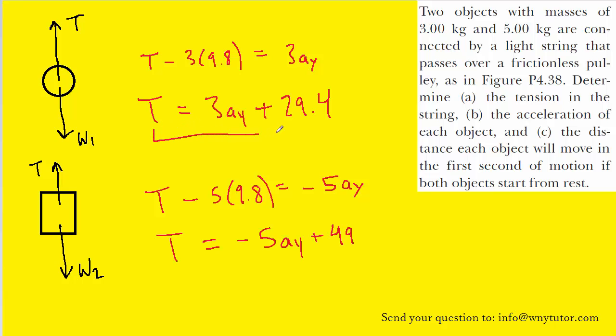So now we have an equation solved for T and then another equation also solved for T. And because those tensions are the same, we can actually set the two equations equal to one another. So we're going to set the 3A plus 29.4 equal to the negative 5A plus 49. And that's going to allow us to solve for A. And we can come down over here and work on that.